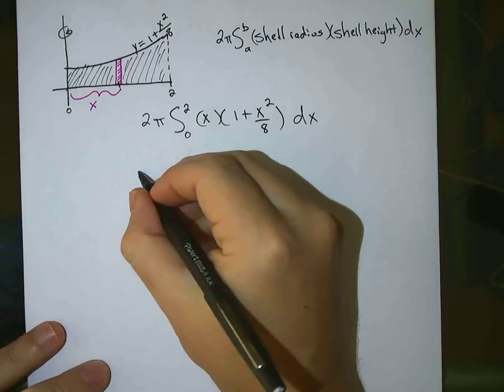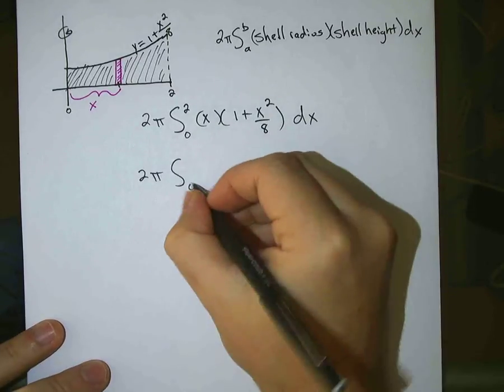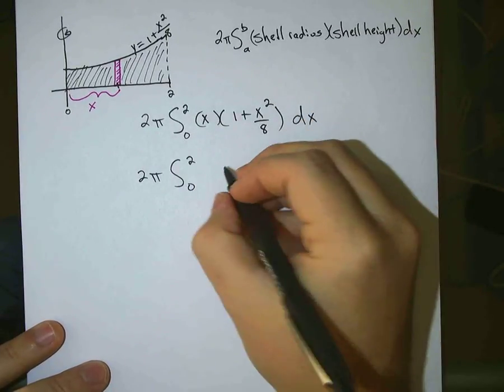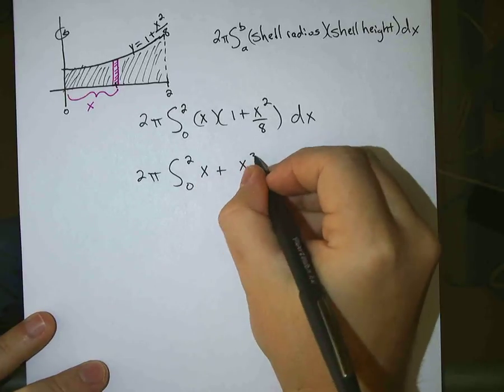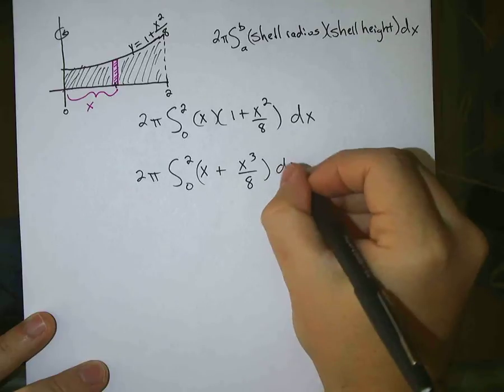Okay, so you can do this, distribute this x to the function there, so you get x plus x cubed over 8, dx.